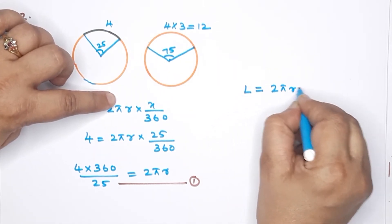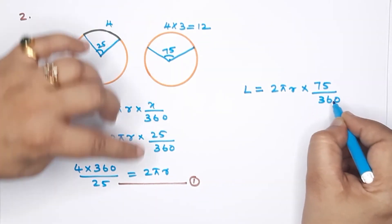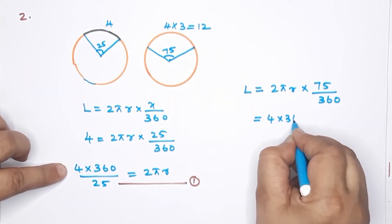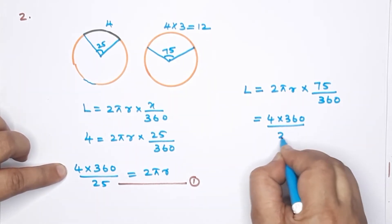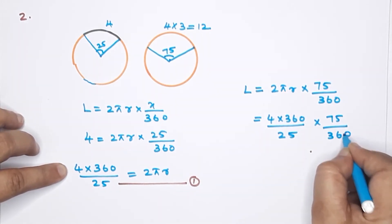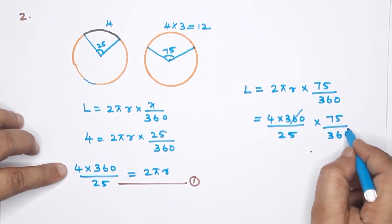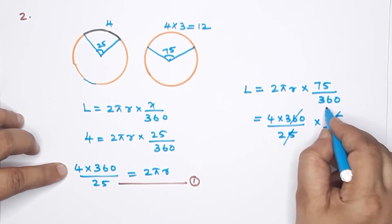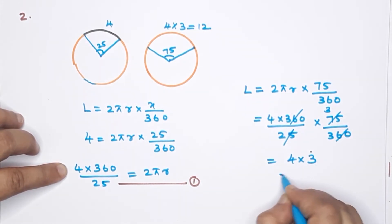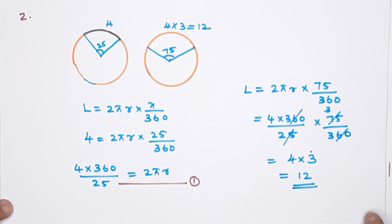Now using the arc length formula: arc length = 2πr × (x/360). Substituting 2πr = 4 × (360/25), the arc length for 75 degrees = 4 × (360/25) × (75/360). The 360s cancel, and 75/25 = 3, so the answer is 4 × 3 = 12 centimeters.